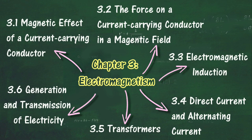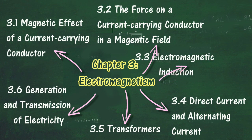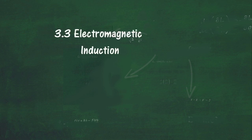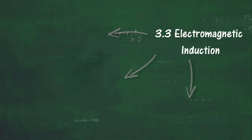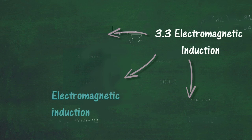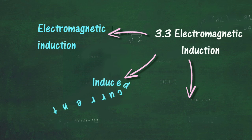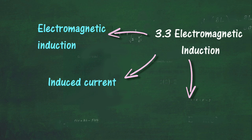In section 3.3, we will learn about electromagnetic induction. At the end of this section, you should be able to: describe electromagnetic induction, indicate the direction of the induced current in a straight wire and solenoid, explain factors that affect the magnitude of the induced current, and describe applications of electromagnetic induction.